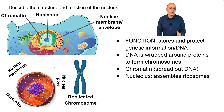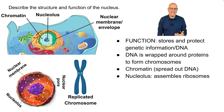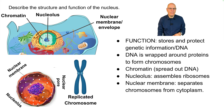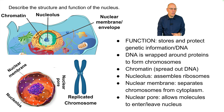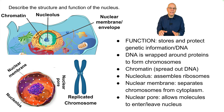The nucleolus is this dark part in the center of the nucleus, and it assembles ribosomes. The entire nucleus is surrounded by a membrane that separates the chromosomes from the cytoplasm, and the nuclear membrane has pores that allow molecules to enter and leave the nucleus.